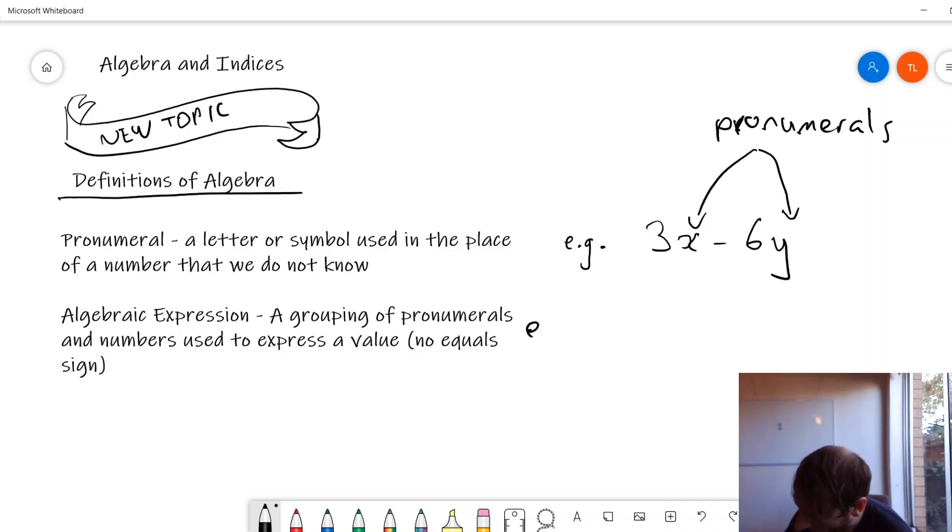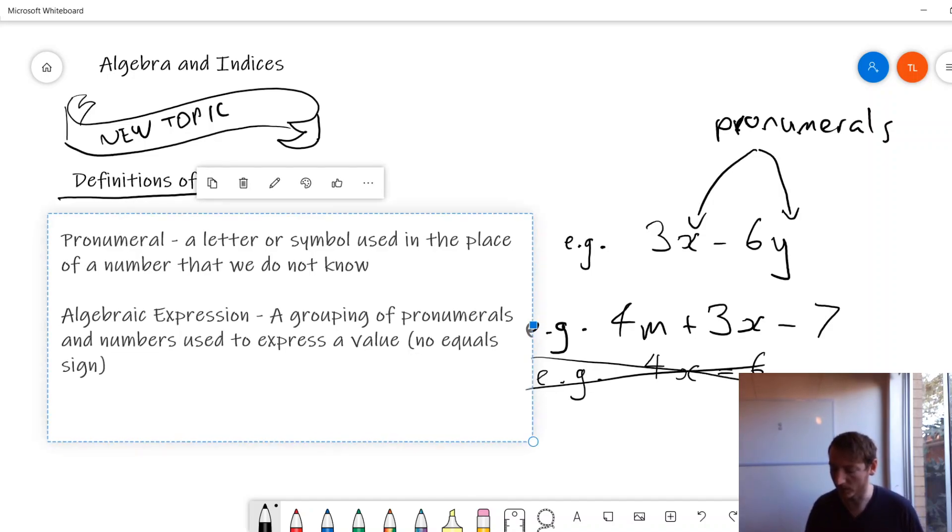Just remember, for an algebraic expression there is no equal sign. So, for example, an expression might be 4m plus 3x minus 7. A non-example would be 4x equals 6 because that's no longer an expression but an equation which we'll be doing in a later chapter.